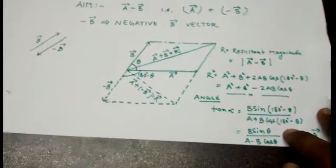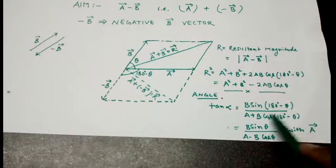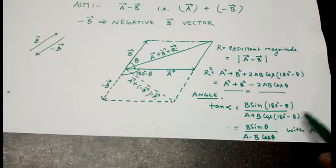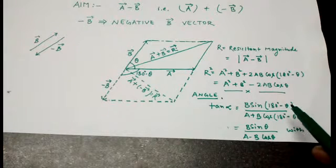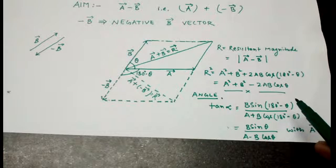Now the next point is to find out the angle. The tan alpha will be given by this. Here if you replace the 180 degree minus theta by theta, we will get the original expression as we found in our derivation of parallelogram of vector addition.